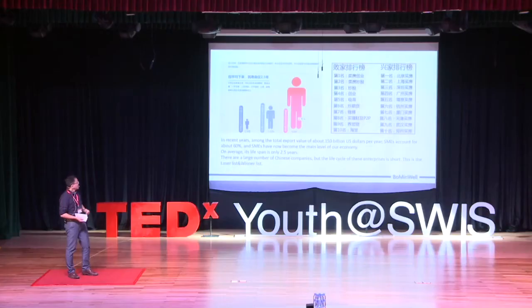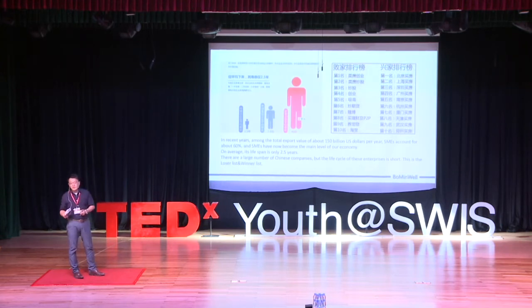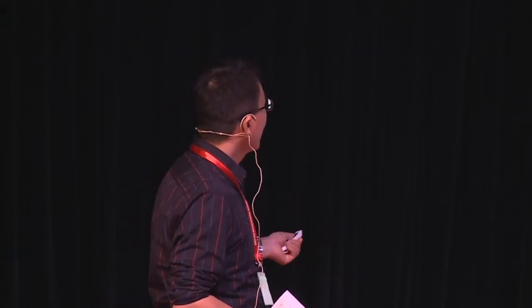There is a statistic on the internet that shows, in recent years after maybe 1979 when the Chinese market opened, we calculated that in China the company's life on average only lasts 2.5 years. And also there is a list that if a guy sells his house and starts his own business - this list is very interesting, it's called the black sheep list.